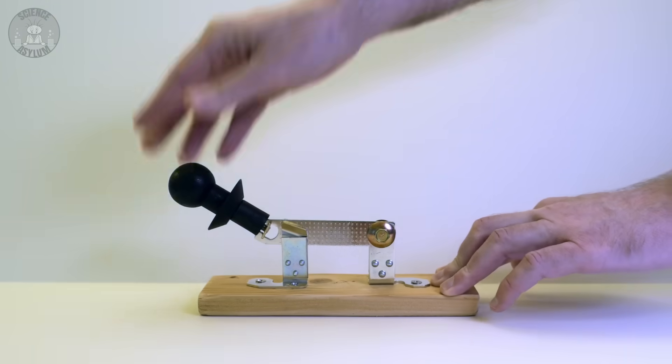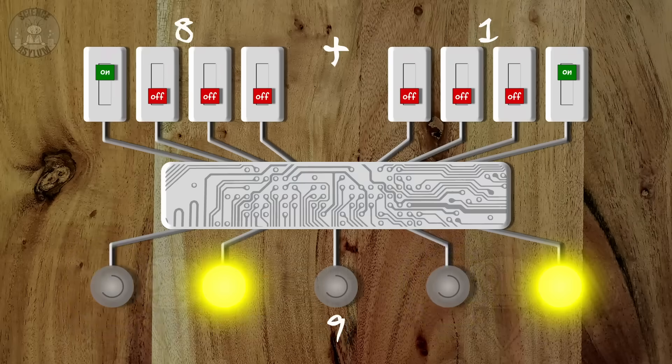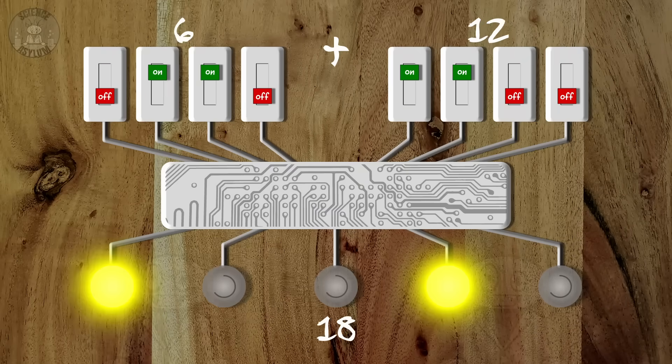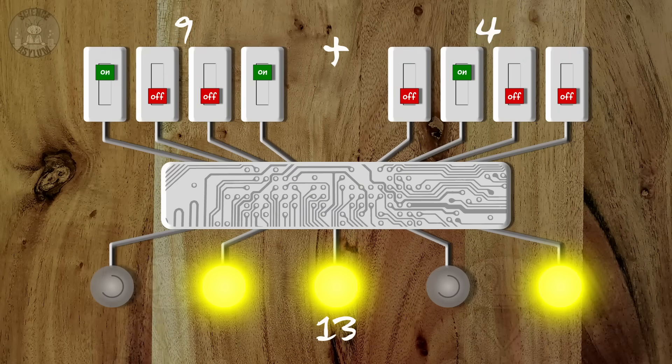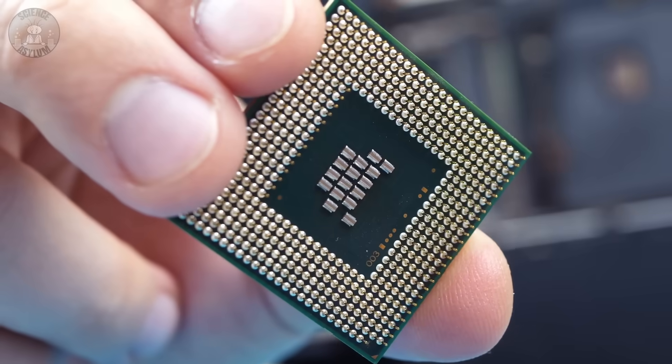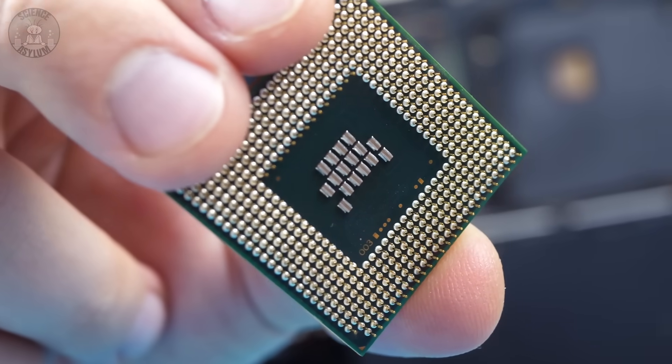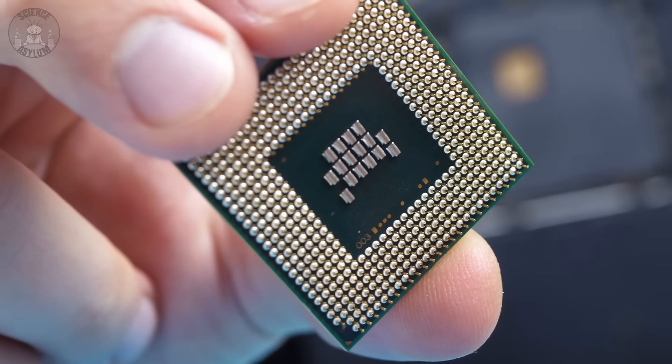This is a switch. If you have several of them, you can do simple math. If there's a billion, you've got yourself a modern computer. But a computer chip is just a piece of rock. How can a rock do math?